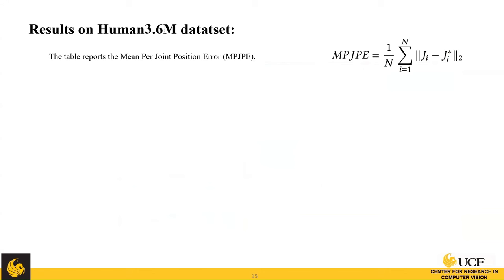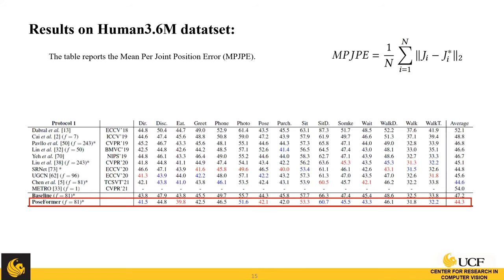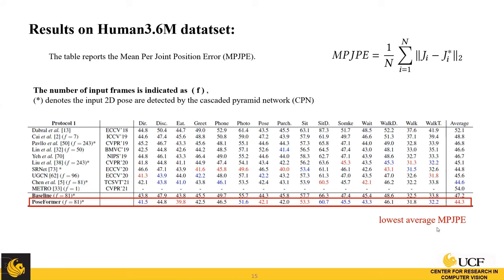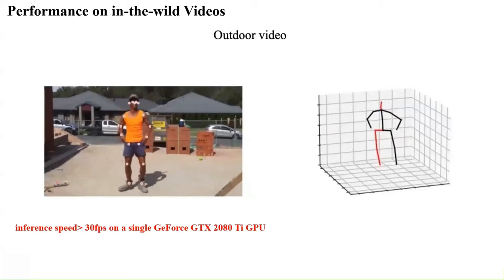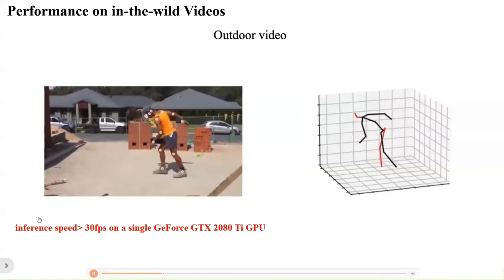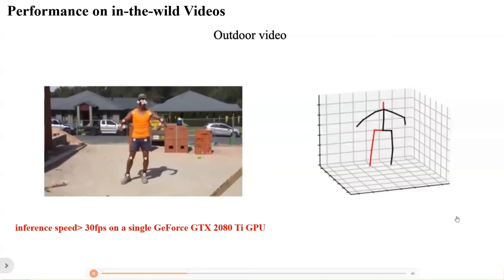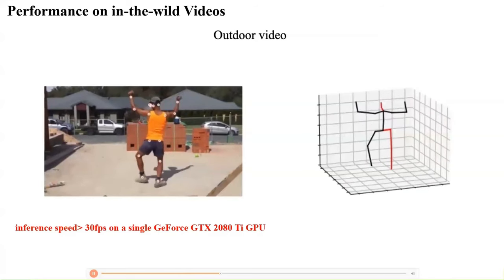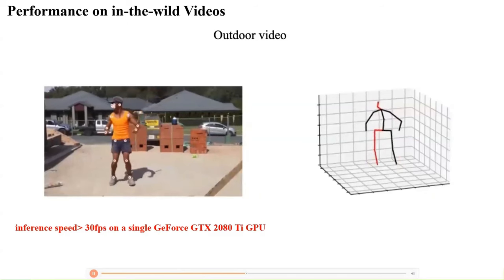We show results on the Human3.6M dataset, reporting the Mean Per Joint Position Error (MPJPE), which measures the distance between the ground-truth 3D joints and our estimated 3D joints. Our PoseFormer achieved the lowest average MPJPE at that time. We also showed performance on in-the-wild videos taken from YouTube, achieving quite good performance. For inference speed, it achieves around 30 FPS on a single GTX 2080 Ti GPU.